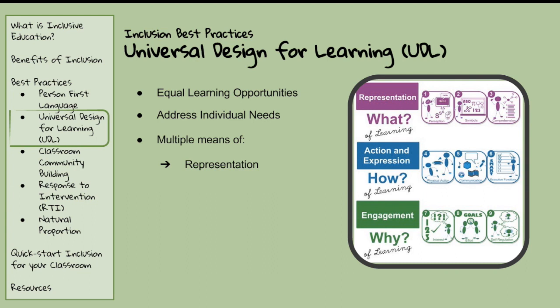A second guideline of UDL is to provide multiple means of action and expression. Learners differ in the ways that they navigate a learning environment and express what they know. There is not one means of action and expression that will be optimal for all learners, so providing options is essential. The final guideline for UDL is to provide multiple means of engagement. Learners differ markedly in the ways in which they can be engaged or motivated to learn. Information that does not engage learners' cognition is in fact inaccessible, and relevant information goes unnoticed and unprocessed, not allowing the child to learn.